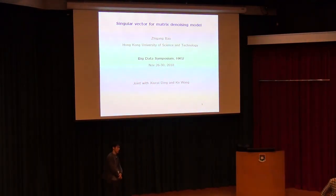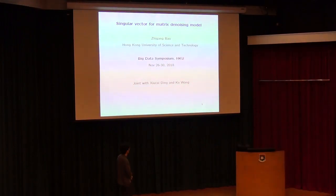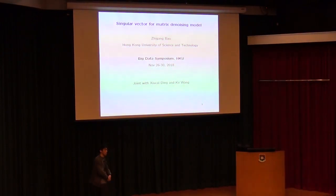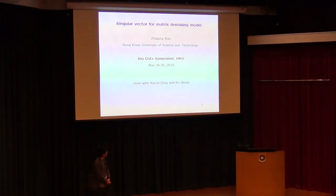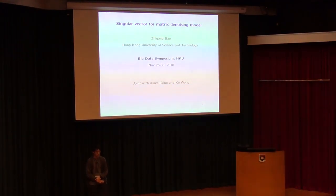First of all, I'd like to thank the organizers for inviting me here. Today I'm going to talk about recent work with my collaborators, Dr. Chiu Tsai-Ting, currently at Duke University, and also my colleague Kho Wang, who is also from Hong Kong University of Science and Technology. This is going to be a mathematical talk, specifically on the field called random matrix theory.